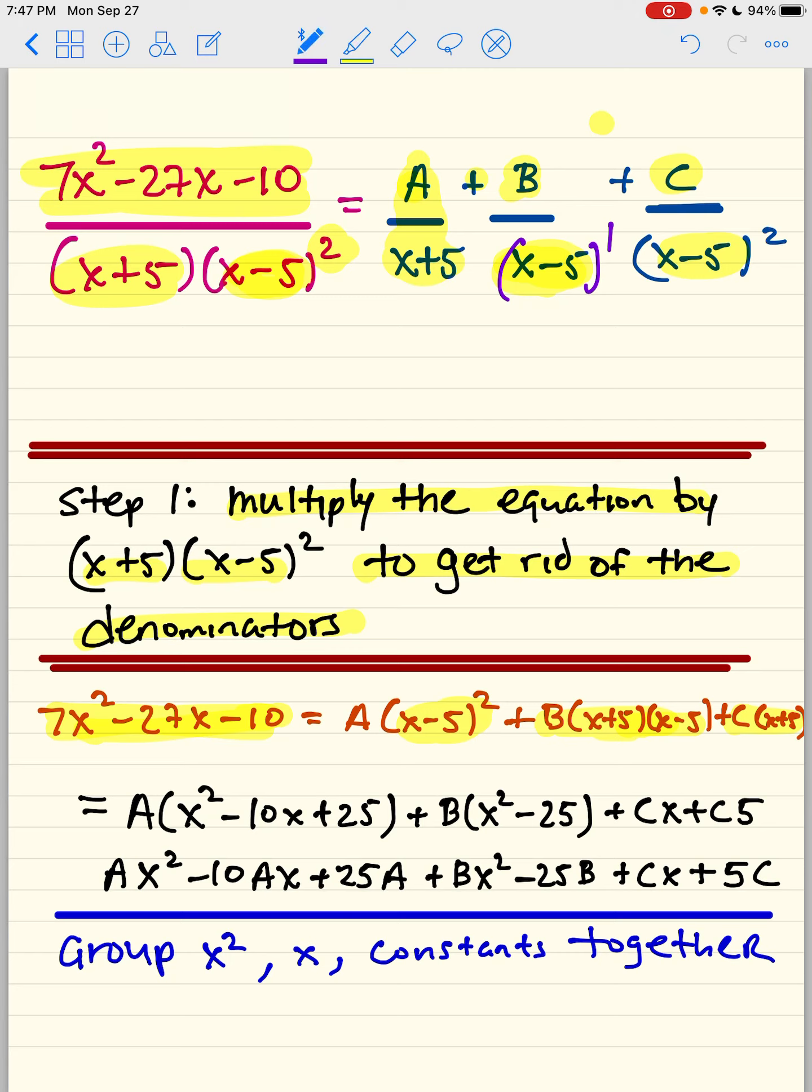So once again, in order to cancel all this out, your common expression is going to be x minus 5, x minus 5, x minus 5, x plus 5. So you're going to put this on top of each piece, and then this will cancel out the whole thing, and then one x plus 5 will cancel this out. You're left with an x minus 5 squared right here.